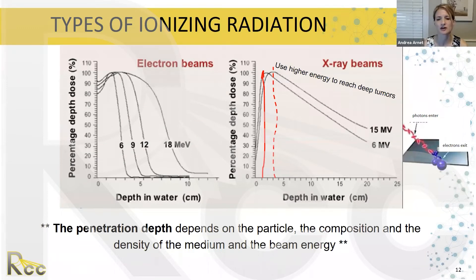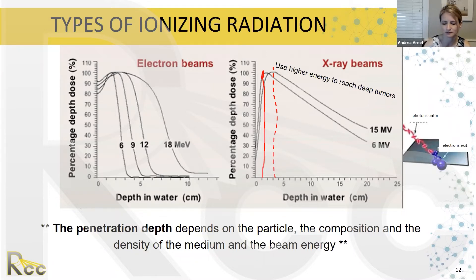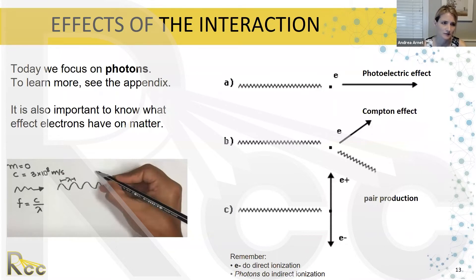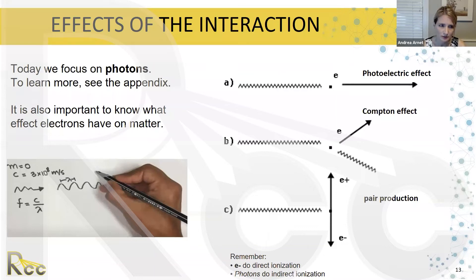Photon beams are more penetrative than electron beams. This graph shows percentage of penetration versus depth in water: a 6 MV and 15 MV x-ray beam can traverse much greater distances and reach their peak dose at greater depth than different electron beams. Today we're focusing on photons, with additional materials available in the appendix.